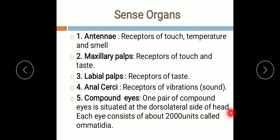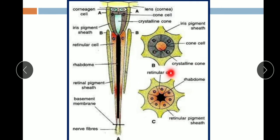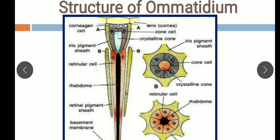One pair of compound eyes is situated at the dorsolateral side of the head, as already shown in the morphology. Each eye in cockroach consists of about 2000 units known as ommatidia — this is why they are called compound eyes, because all these units together form the eye, with each ommatidium working as an individual eye. Each ommatidium is a long pyramidal structure with two major regions: a light-sensitive region and an image-forming or sensory region.